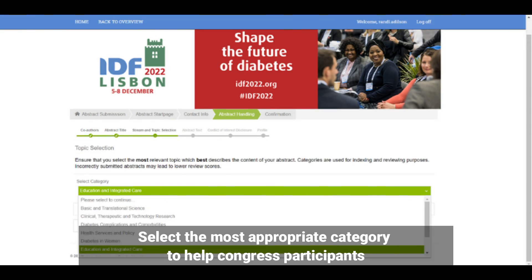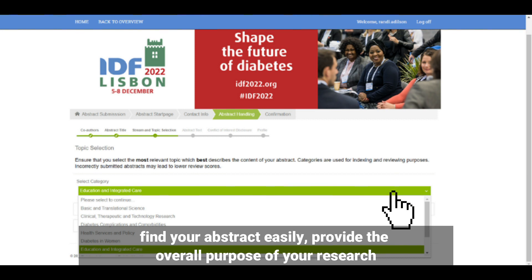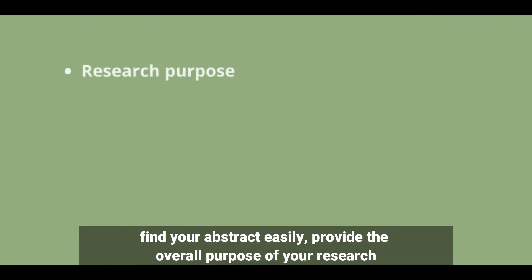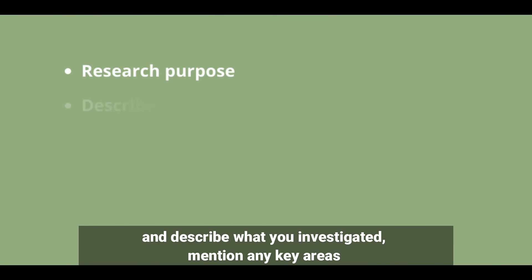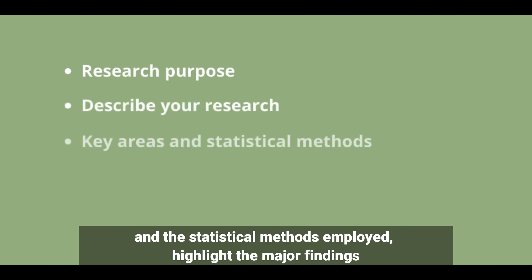Select the most appropriate category to help congress participants find your abstract easily. Provide the overall purpose of your research and describe what you investigated. Mention any key areas and the statistical methods employed.